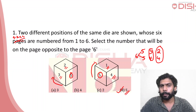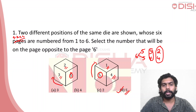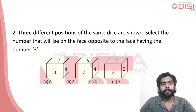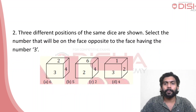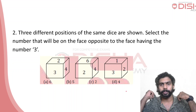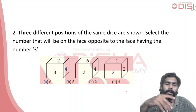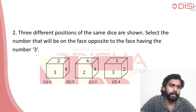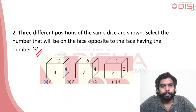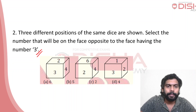Now we will look at a question about how quickly we can find the answer. If we look clockwise and collect the clockwise arrangement, please check the question. Three different positions of the same dice are given. We need to find the number on the face opposite to the face having number 3.